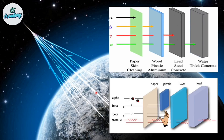Beta particles, being negatively charged, move towards positively charged metal plates, and alpha particles, which are positively charged, will move towards negative plates. In our next lesson, we will discuss in further detail the characteristics of all these three kinds of radiations. After that, you will also learn about fundamental particles of the nucleus and atom as well.